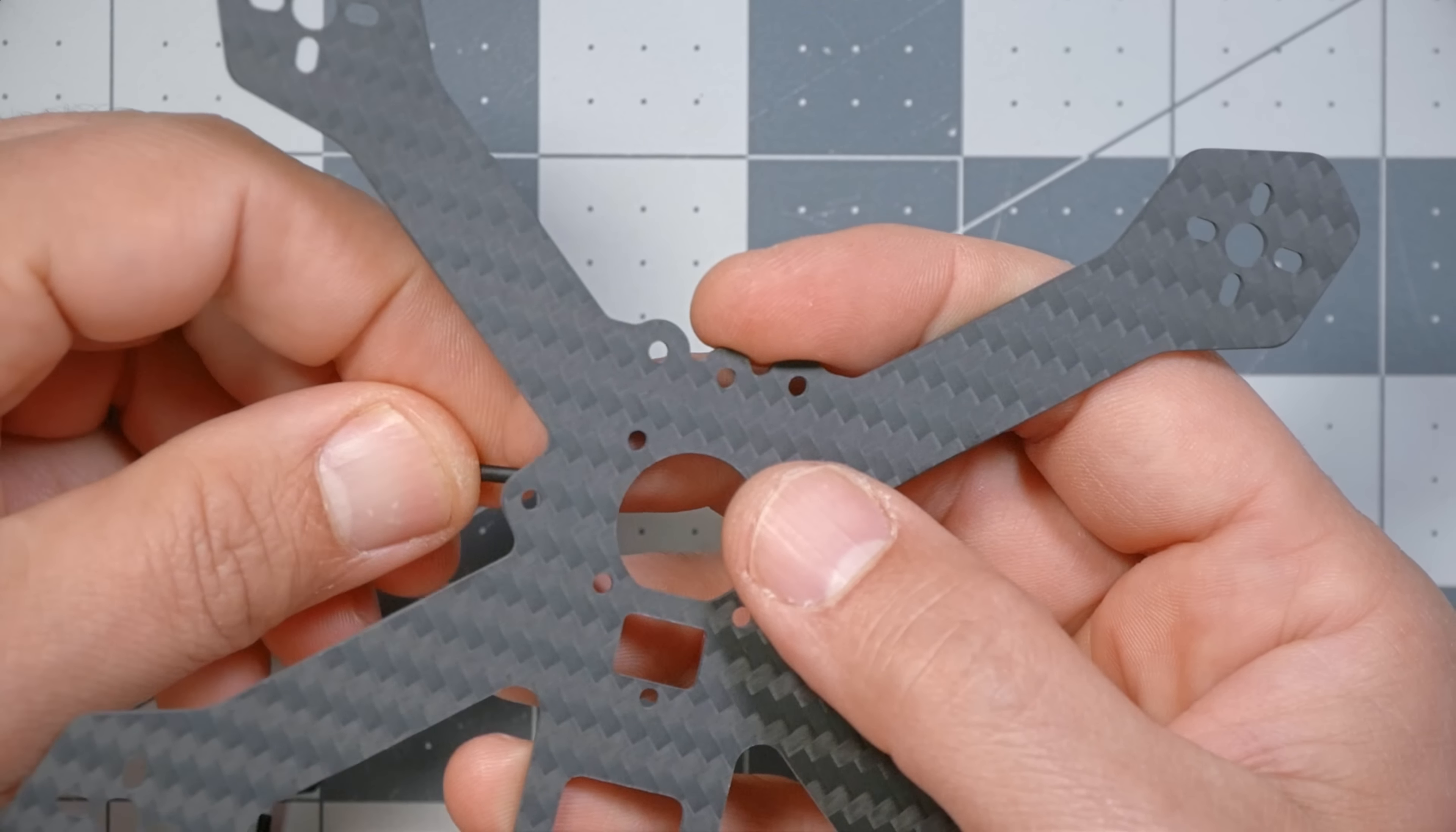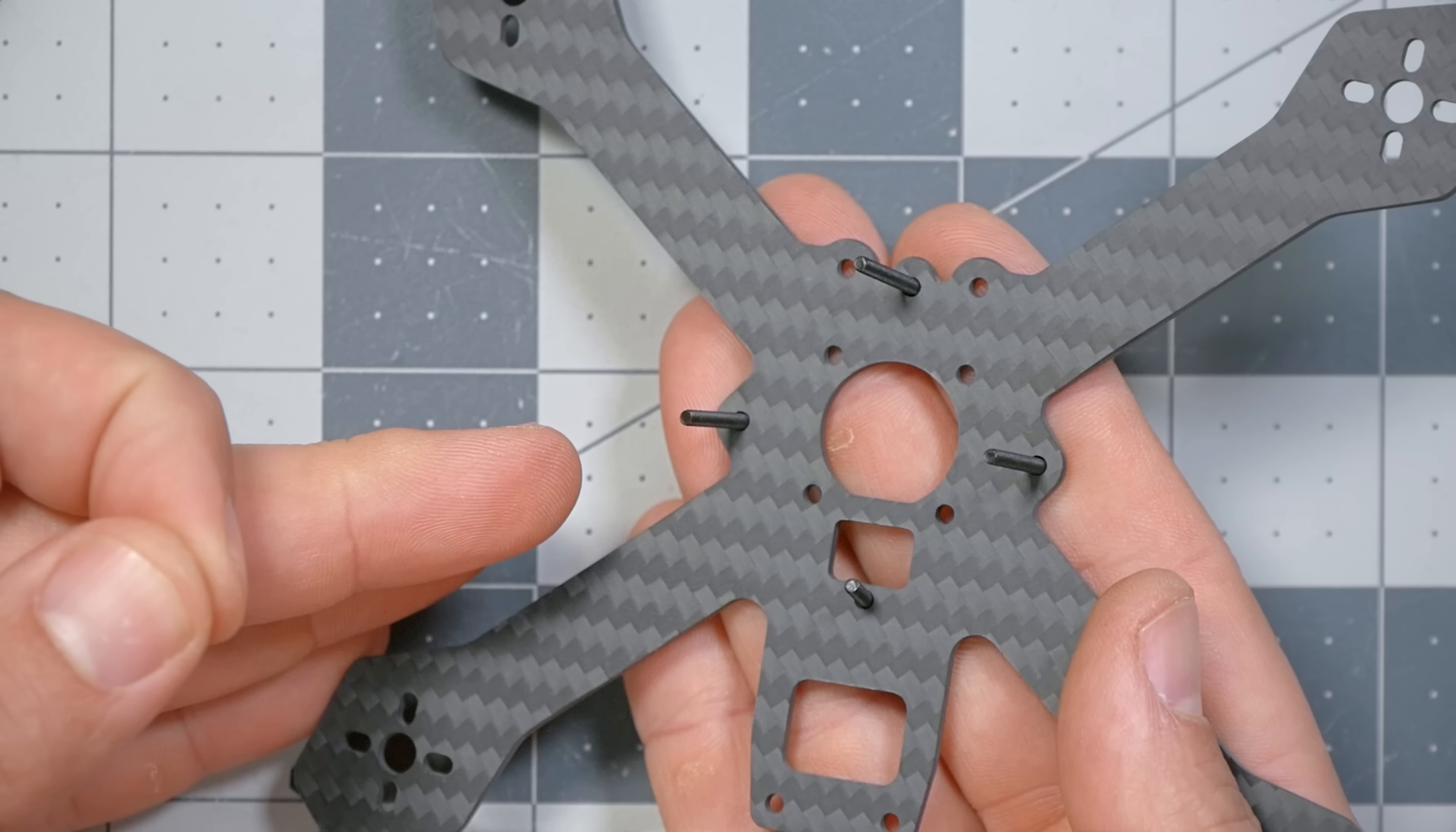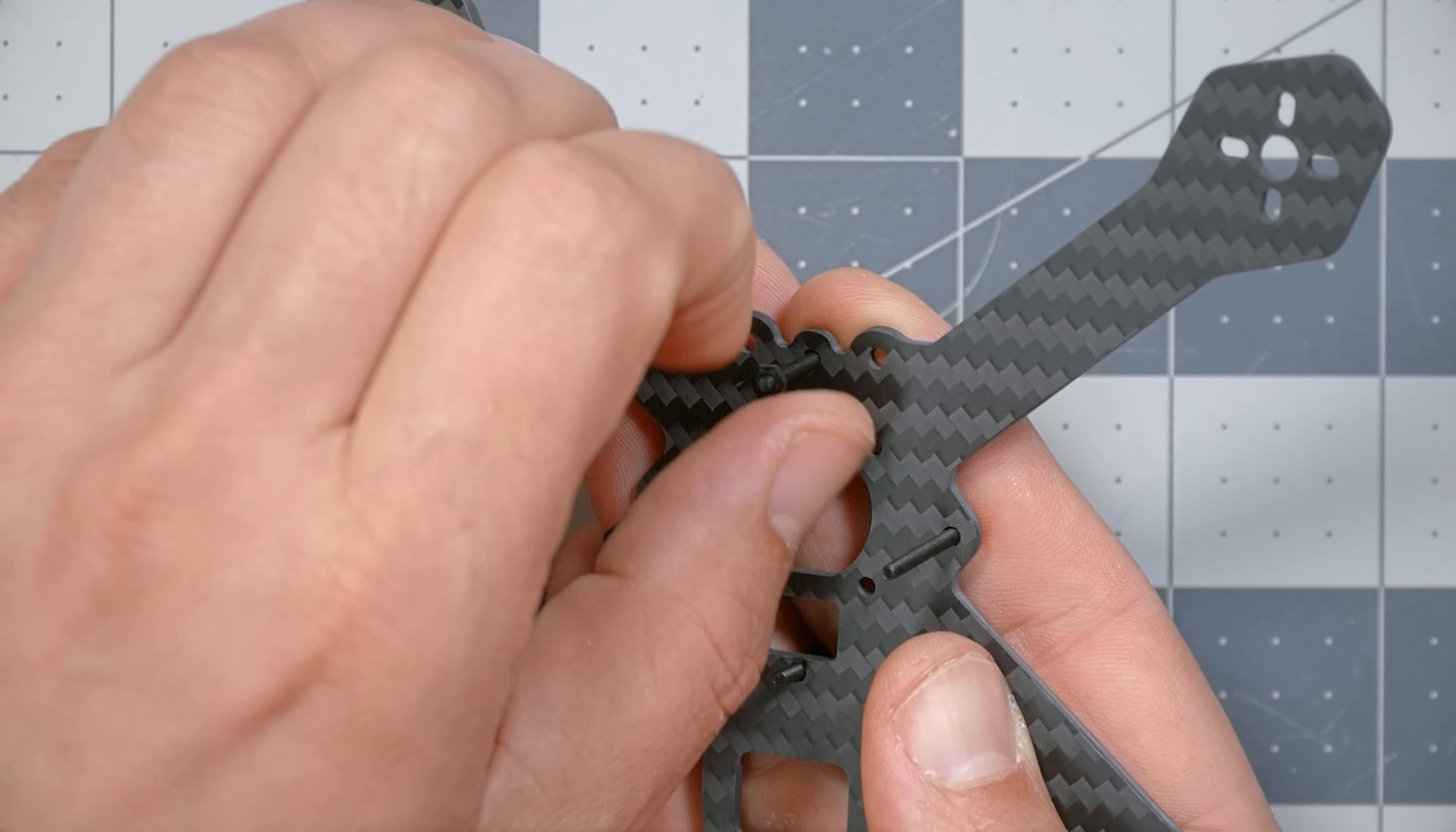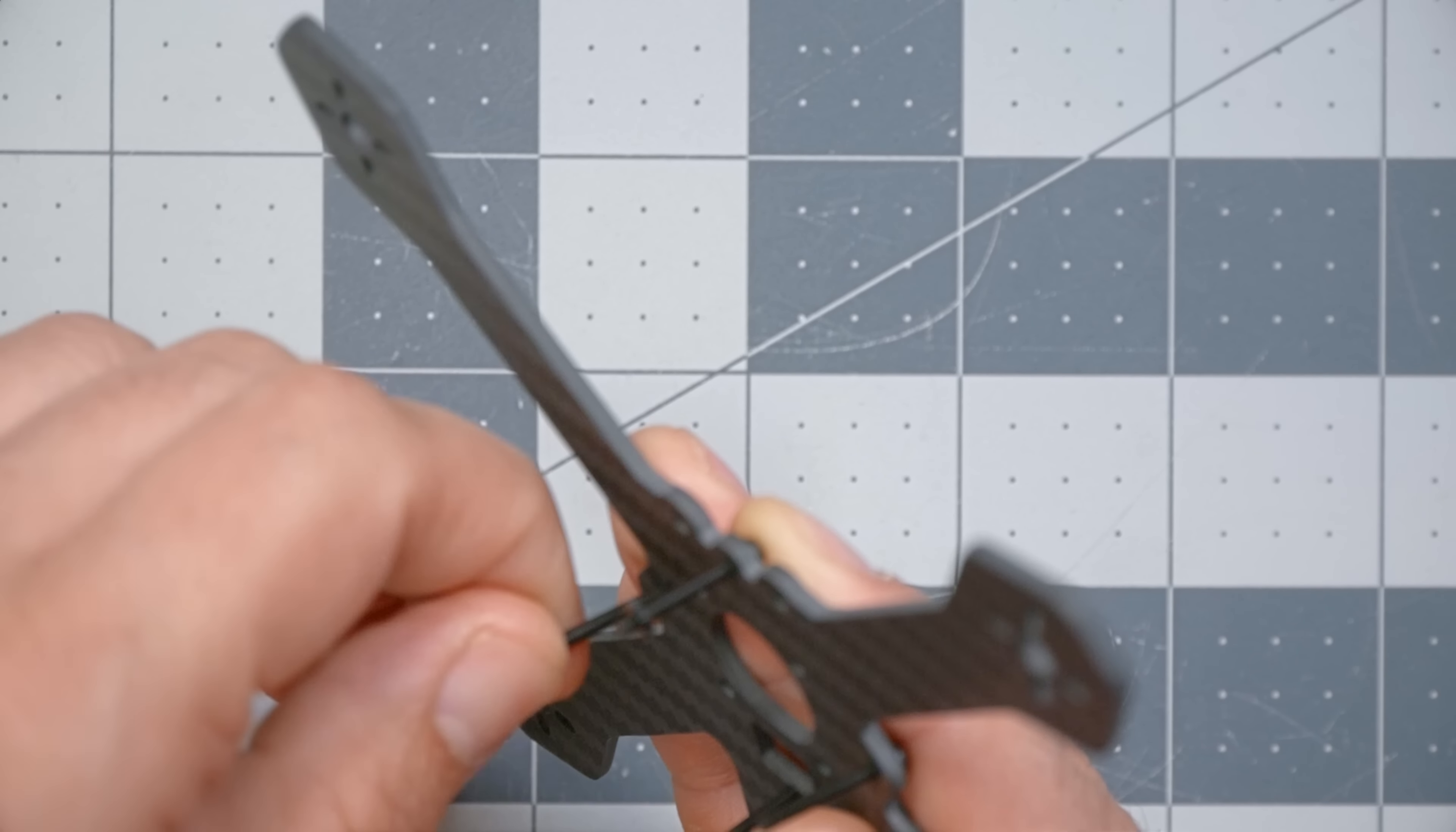These are going to be used to mount our flight controller. We're going to put them up through these four holes in the main plate. Once the four screws are placed, we will install one of the nylon nuts on each of them to hold them in place. And you're going to leave these nuts loose, so the screws have just a little bit of flop in them, and that's going to help us get our flight controller installed.